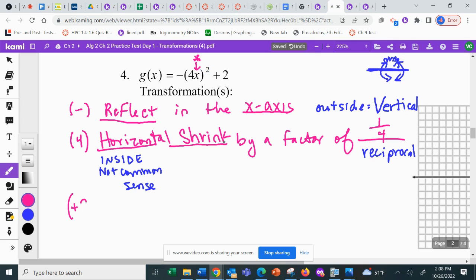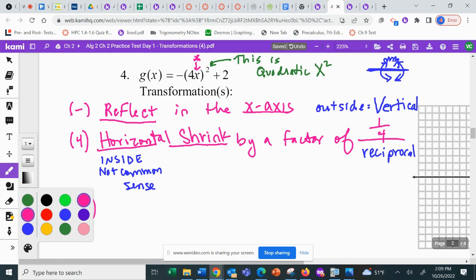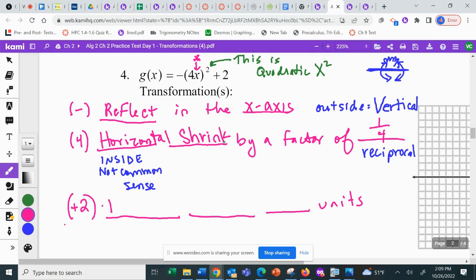And then we come to our plus two. The squared is not a transformation. The squared tells us this is quadratic, that's telling us our parent function is x squared. So we come to the plus two. It's going to be blank blank blank blank units. The special word is translate. The direction is up for two units. Because we're going up, this is vertical. Because it's outside, it's vertical. And it's common sense.